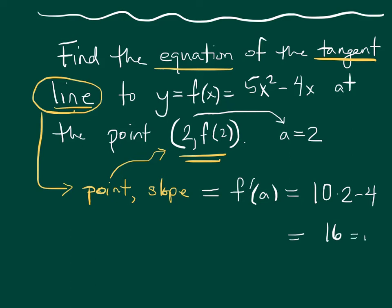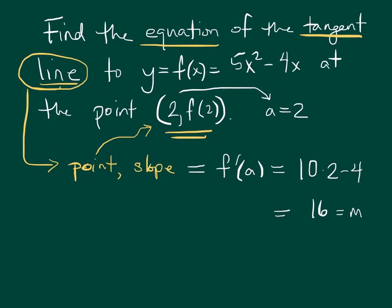So we could call this m tangent. I think that's what he does in the notes. So that's our slope. Our point, the x-coordinate is 2, and then we've got to figure out what f of 2 is. That's 5 times 2 squared minus 4 times 2, which is 12. So our point is 2 comma 12.